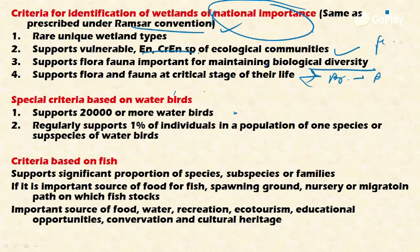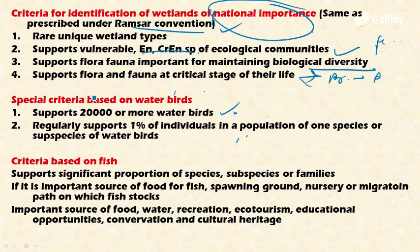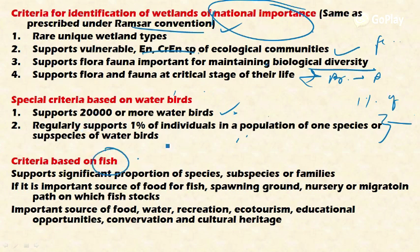Based on the criteria of water birds, we can also declare a wetland as a Wetland of National Importance. First, if a wetland supports more than 20,000 water birds, it is considered a nationally important wetland. Second, if it regularly supports one percent of the individuals in a population of one species of wetland birds, that area is also considered a wetland of national importance.